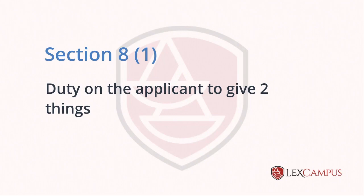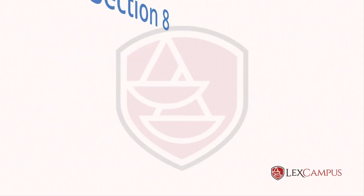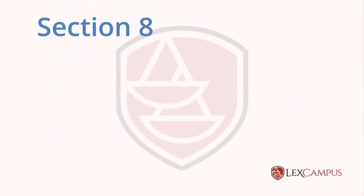So the first thing to remember is that Section 8 contains two things: one, the applicant has to file a statement, and two, the applicant has to give an undertaking to keep the controller informed until the patent is granted in India. After that, there is no obligation. This is the first thing to remember about Section 8.